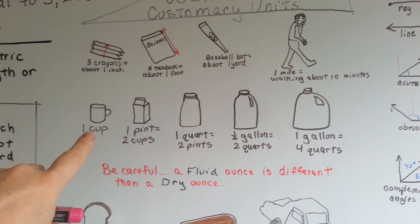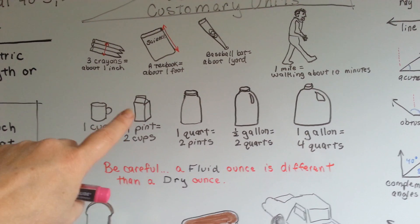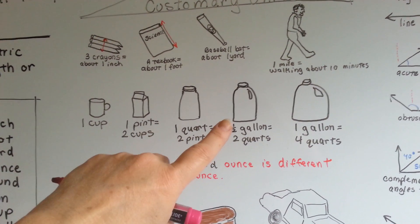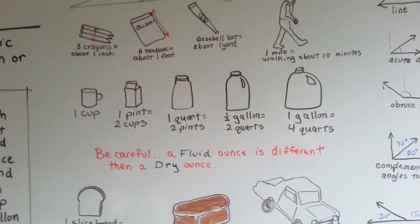You know what a cup of water or milk is. One pint is two cups, one quart is two pints, a half of a gallon is two quarts, and a gallon is four quarts.